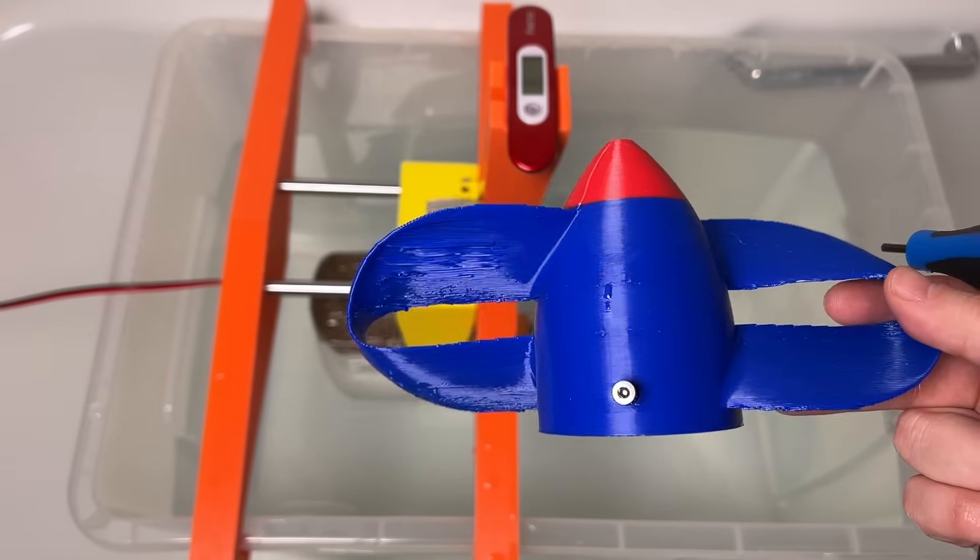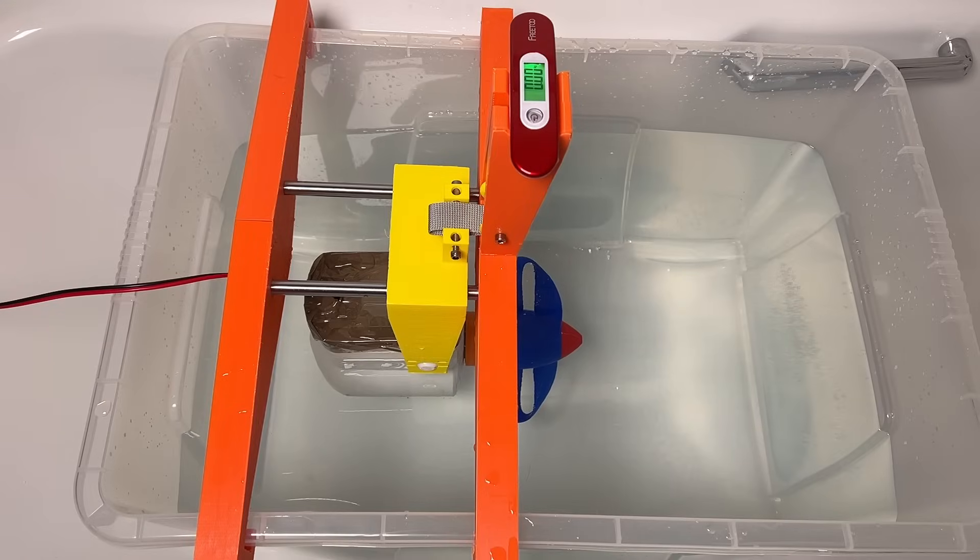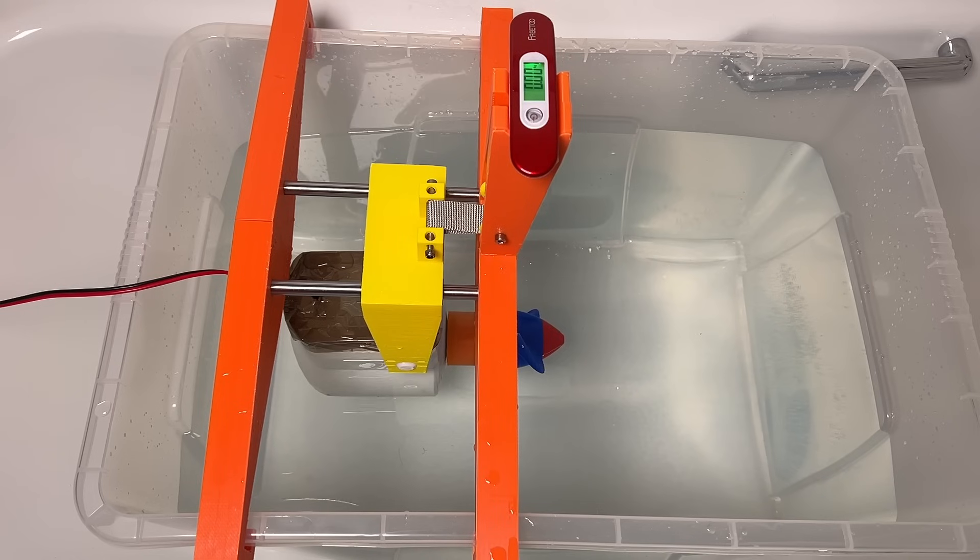Okay, next up is the toroidal propeller. Okay, here we go. Again, the wrong direction. If only the power terminals weren't to screw on. And we're off.